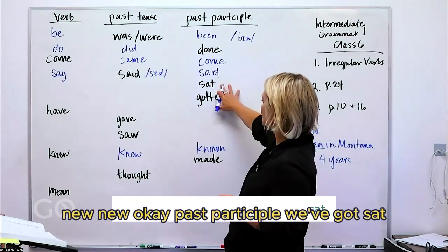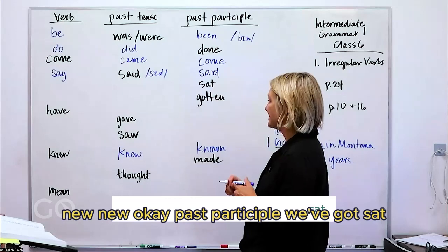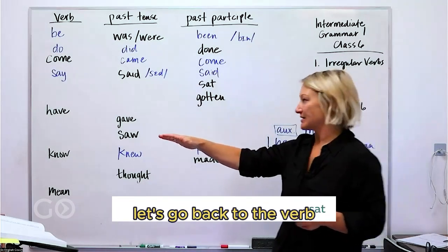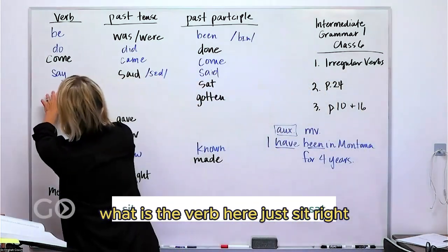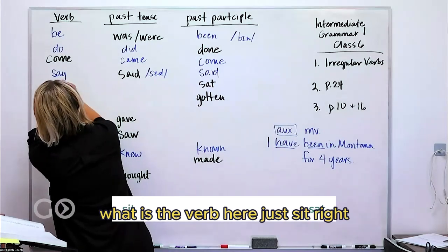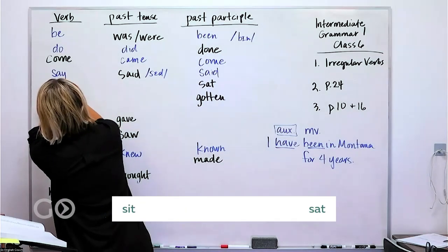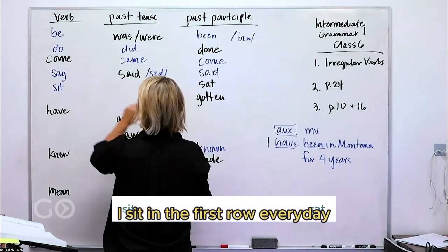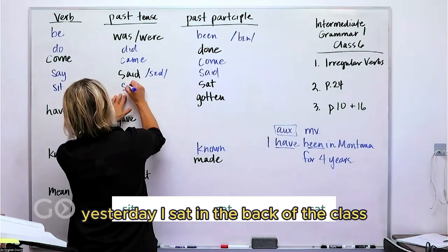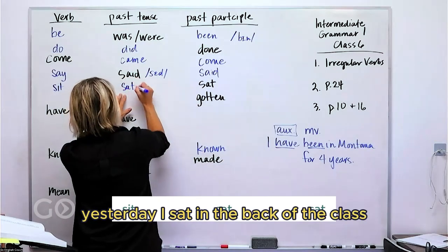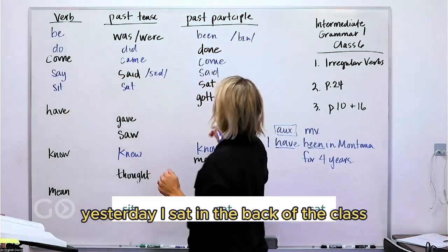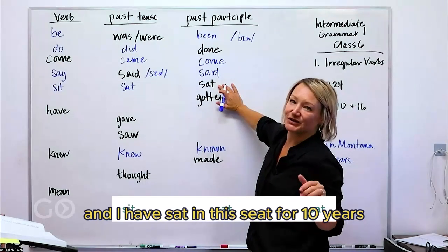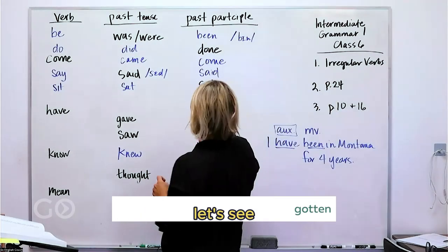The past participle here is 'sat.' Working backwards, the main verb is 'to sit.' I sit in the first row every day. Yesterday, I sat in the back of the class. And I have sat in this seat for 10 years.